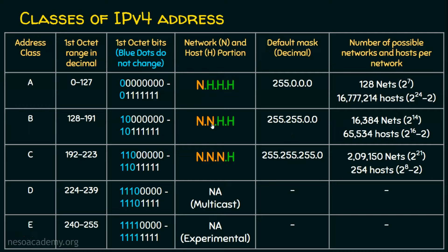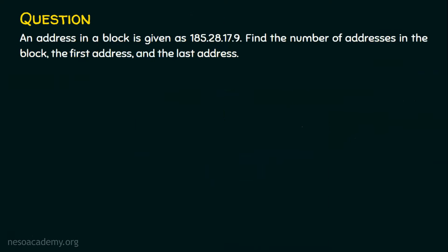Coming to the default subnet mask — we know in class B the first two octets are for the network portion. So we will be having 255.255 in the first two octets of the subnet mask. The remaining two octets are zero, representing the host portion. We will see an example now.